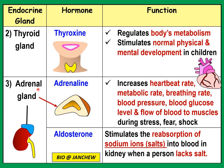The third gland is the adrenal gland, which secretes two hormones: adrenaline and aldosterone. The adrenal gland is located just above the kidney, and each person has a pair of adrenal glands. Adrenaline is produced when a person is in a stressful situation — in fear, in shock, or during an emergency. The mind becomes more alert and adrenaline is released, increasing the heartbeat rate, metabolic rate, and breathing rate.